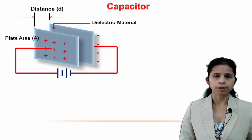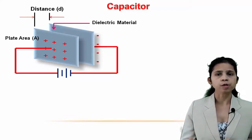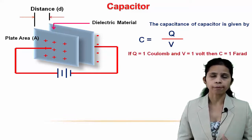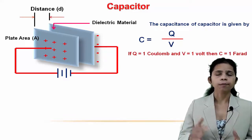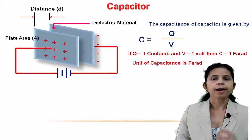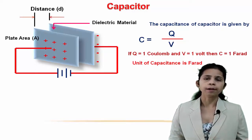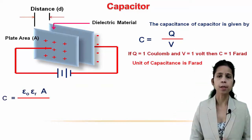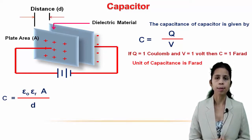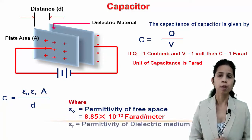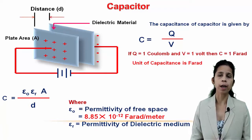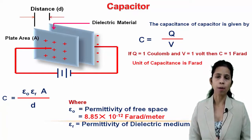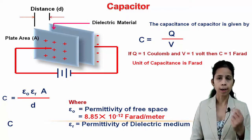Due to this positive and negative charge, a potential difference is established across the two plates. If Q is the charge given to the plates and it establishes a potential difference of V volts, then the capacitance is given by C = Q/V. If Q = 1 and V = 1, then C = 1 Farad. One Farad is defined as the capacitance of a capacitor which requires a charge of 1 coulomb to establish a potential difference of 1 volt between its plates. The capacitance is also given by C = ε₀ εᵣ A / D, where ε₀ is the permittivity of free space, equal to 8.85 × 10⁻¹² Farad per meter, and εᵣ is the permittivity of the dielectric medium.